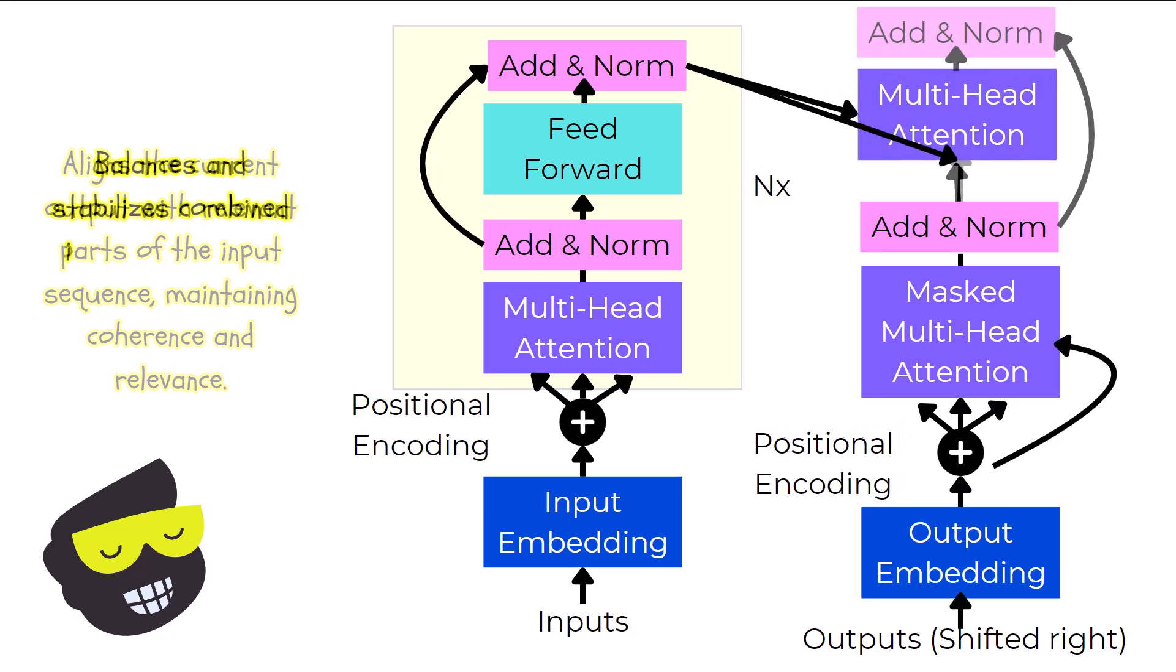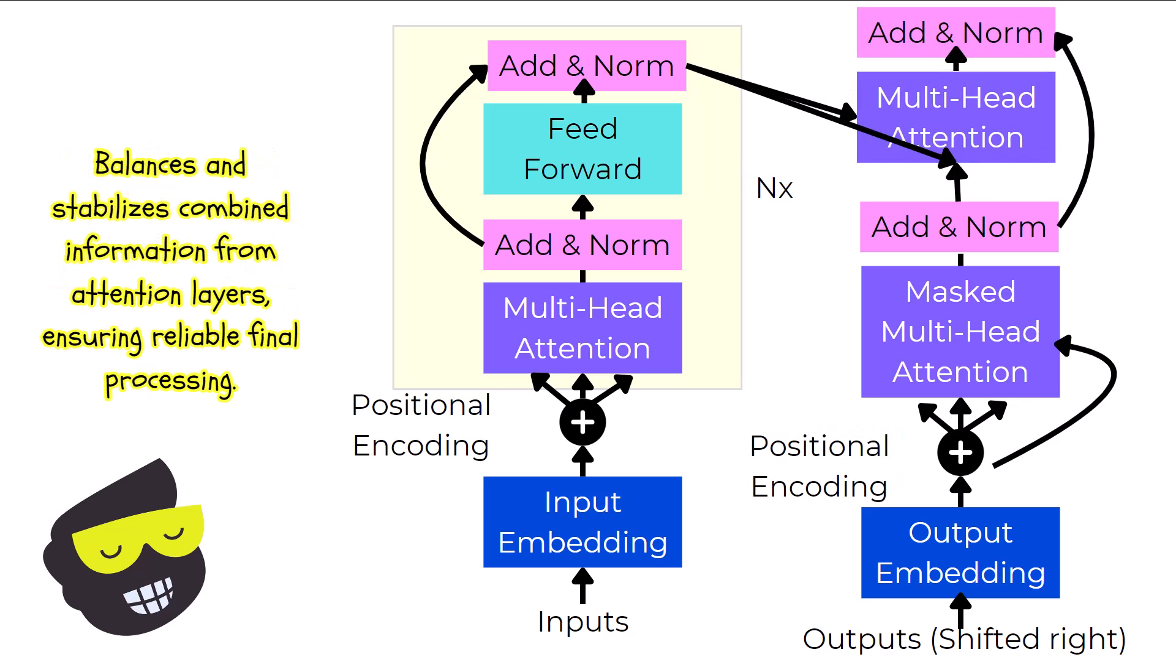At the top right corner of the decoder, the add and norm layer plays a crucial role. It takes the combined information from the multi-head attention layers and stabilizes it. This layer again helps maintain consistency.